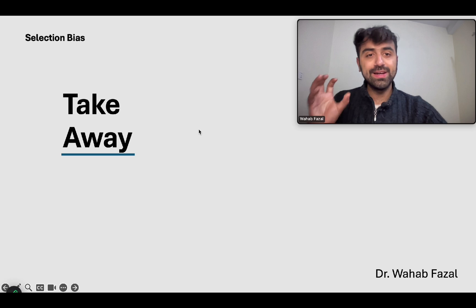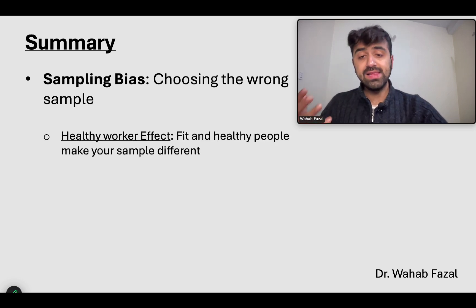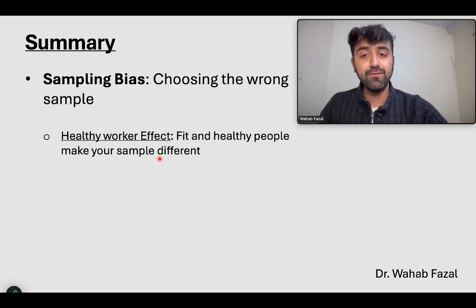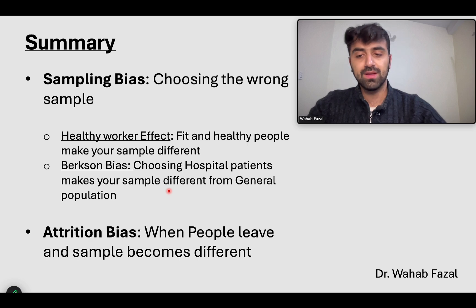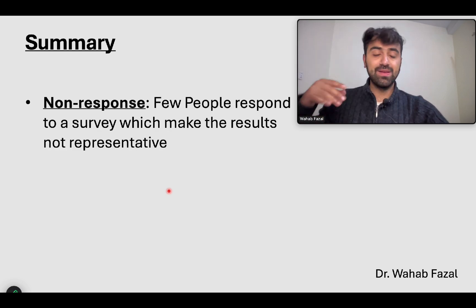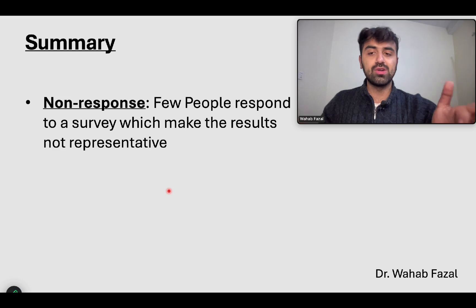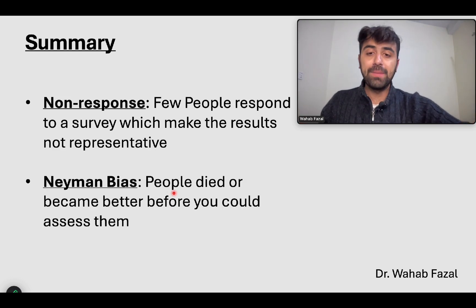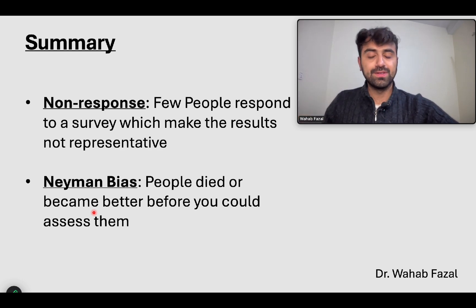Let's summarize everything. Sampling bias: choosing the wrong sample. Healthy worker effect: choosing fit and healthy people, which makes your sample different from the general population. Berkson bias — Berkson General Hospital — choosing hospital patients makes your sample different from the general population. Attrition bias: people leave your study and your sample becomes different. Non-response bias: people did not respond to surveys, and the very few who did cause results to be skewed and not representative. Neiman bias: people died or became better before you could assess them — you didn't look at all the patients who died along the way and then say survival is very good.